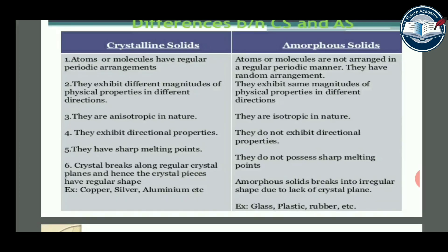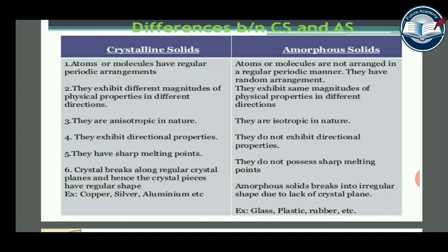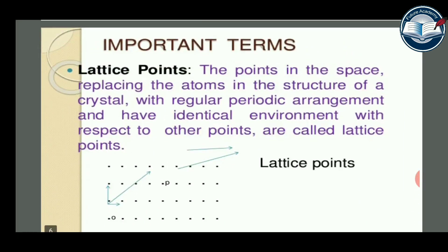If you break a crystal along regular crystal planes, the crystal pieces have a regular shape — for example, copper, silver, aluminium. But amorphous solids break into irregular shapes due to the lack of crystal planes — for example, glass, plastic, rubber. Lattice points are the points in space replacing the atoms in the structure of a crystal, with regular periodic arrangements, where every point has an identical environment with respect to other points.